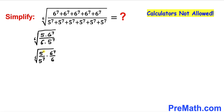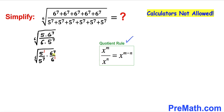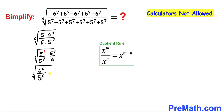We know that 5 is the same as 5^1 and 6 is the same as 6^1. Now let's recall the quotient rule of exponents and apply it on both parts. This gives us 6^(7−1) = 6^6 in the numerator, and likewise 5^(7−1) = 5^6 in the denominator.